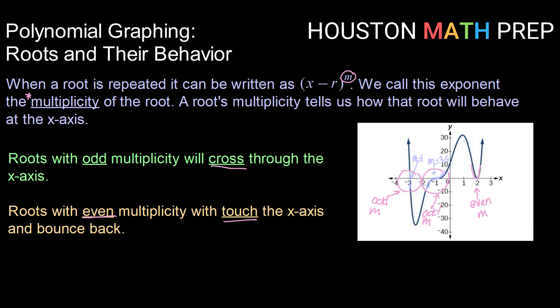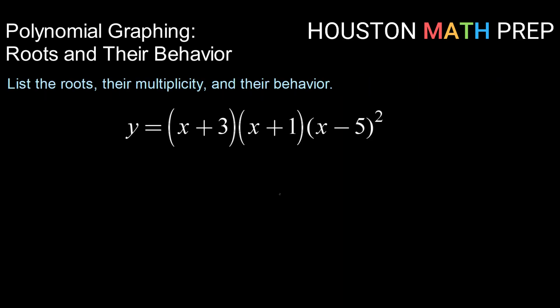So let's take a look at how we might be able to use that information. Here we have a polynomial written for us in factored form so that we can more easily see the roots. For this polynomial, we want to list each root, list its multiplicity, and then determine what kind of behavior would that root have. Would it touch the x-axis or would it cross the x-axis? In factored form, we're going to look at each factor, and that is going to give us a root.